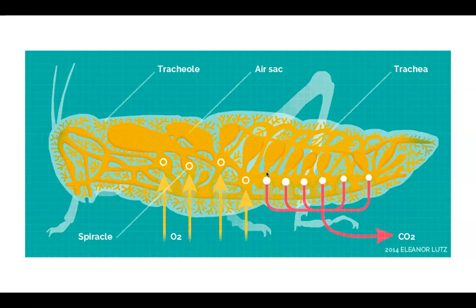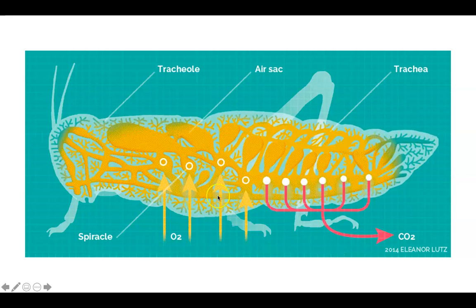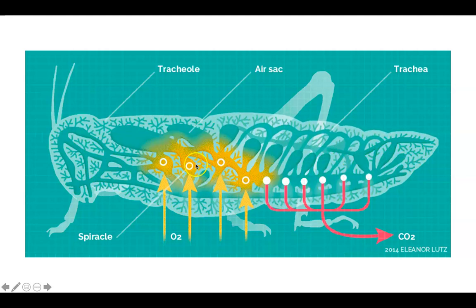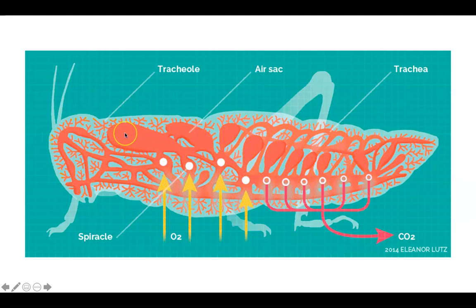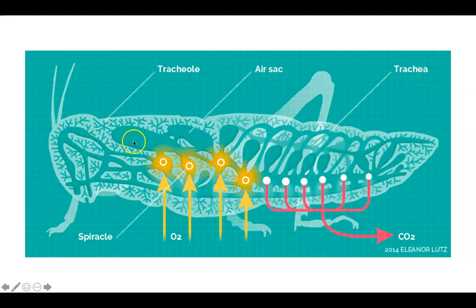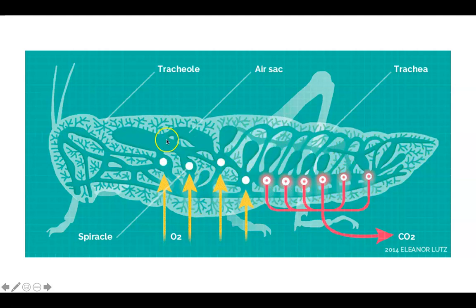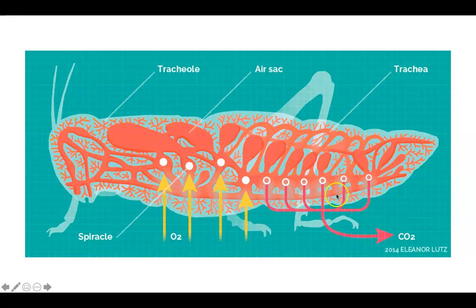So we have the oxygen diffusing its way in. It then goes through all of the air sacs into the tracheoles, which are sort of like the, not quite the alveoli, but kind of the equivalent, I guess you could say, where the blood is, and that allows for that exchange of gas to occur, and then the carbon dioxide will be pushed out as well.